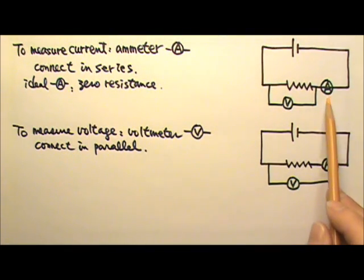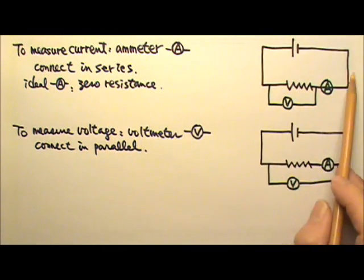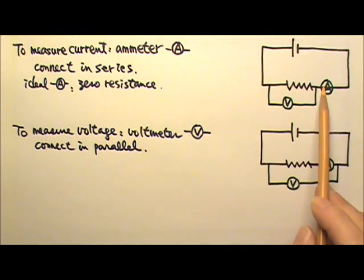So when we add the ammeter to the system, the effective resistance in this loop would stay the same.